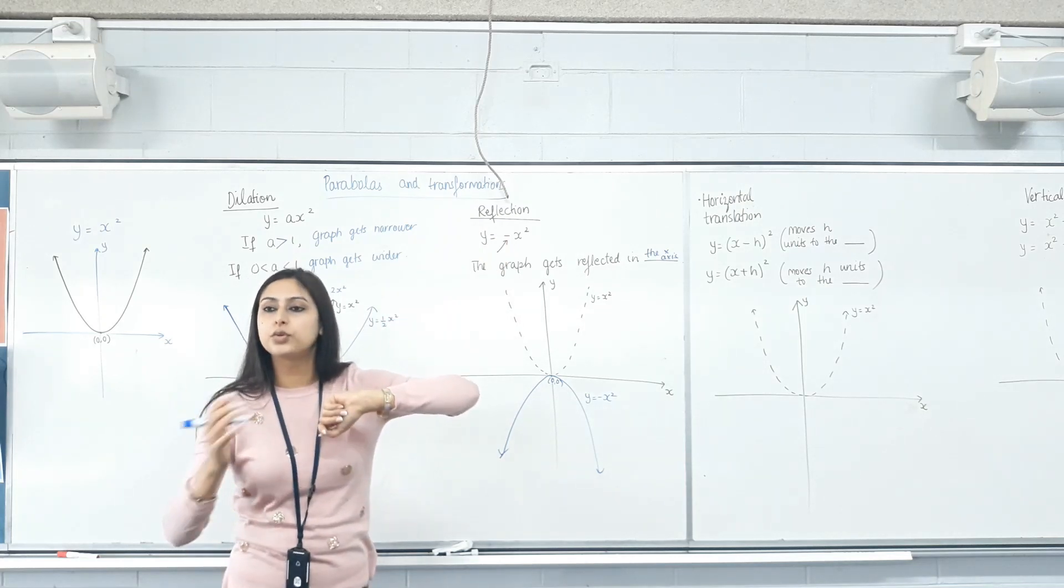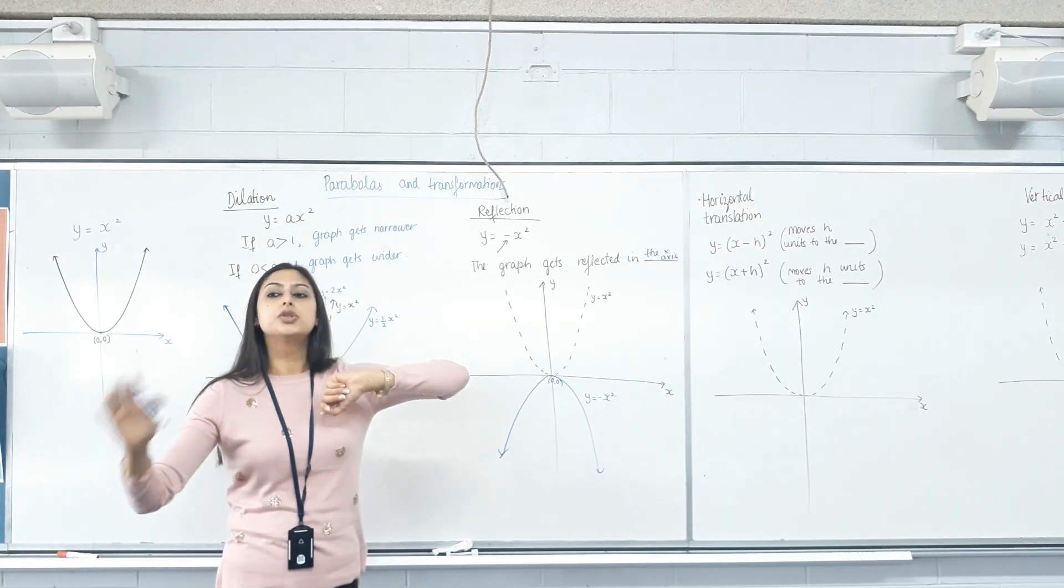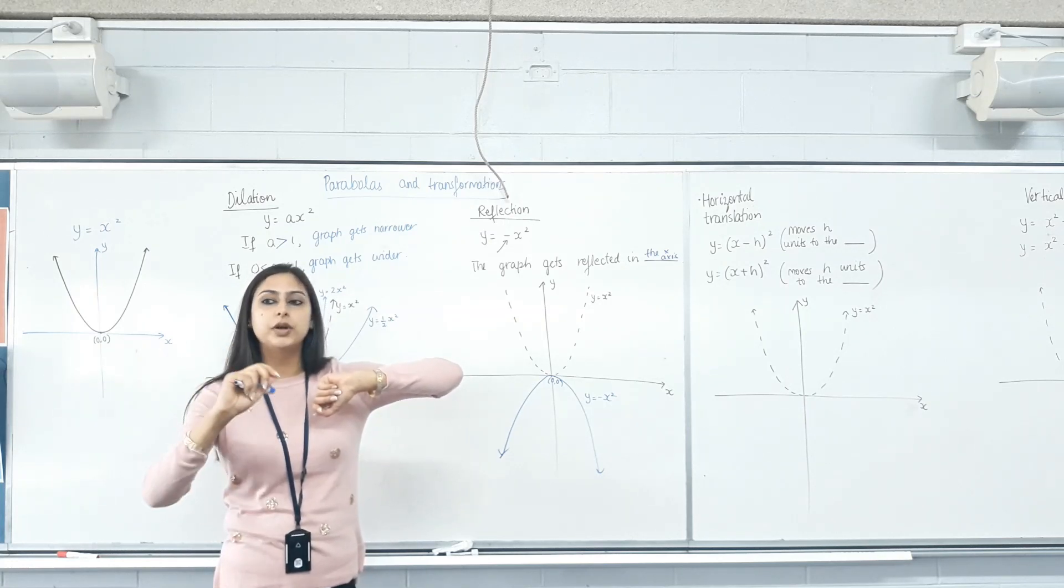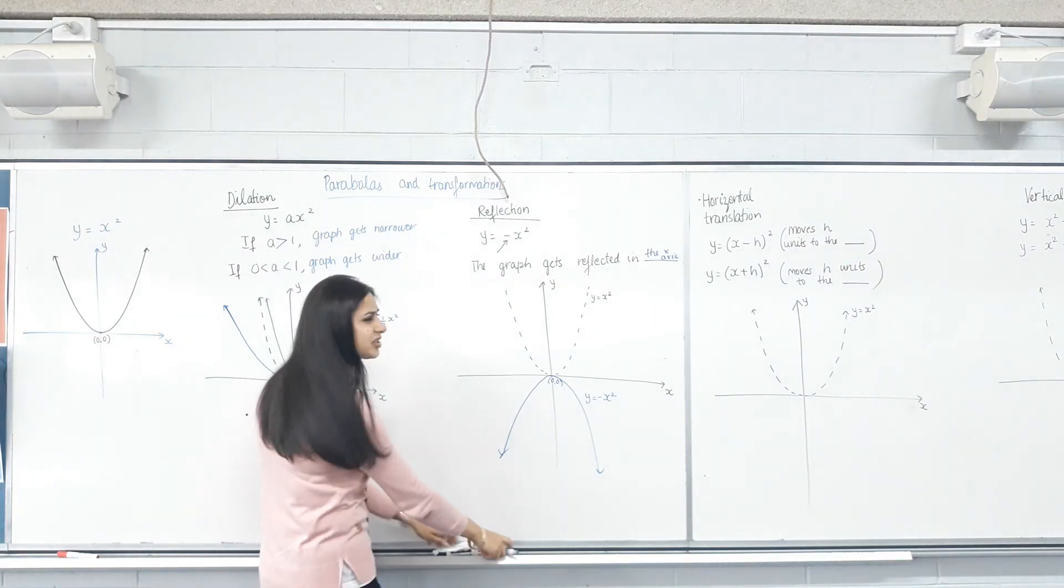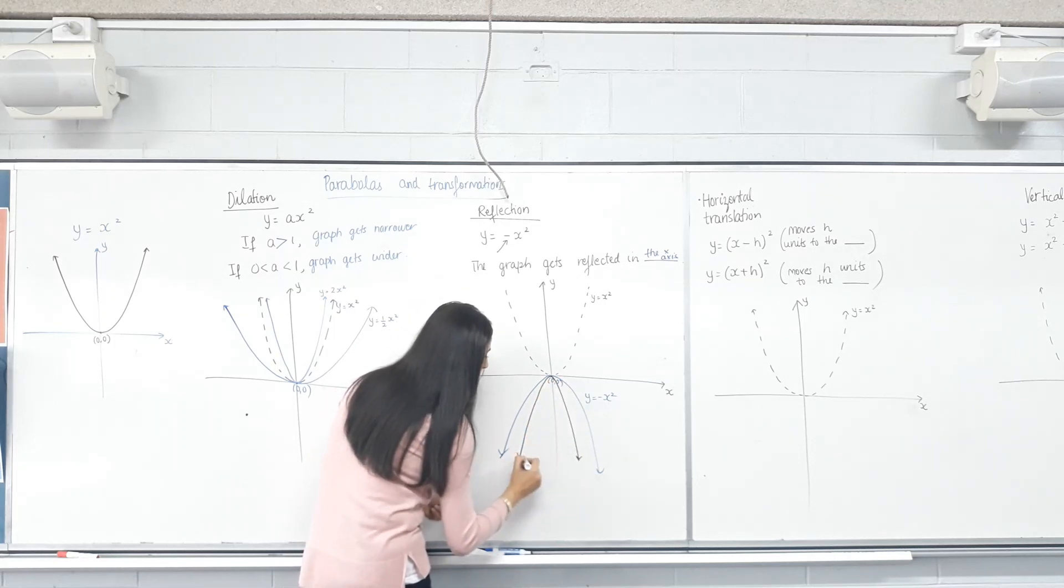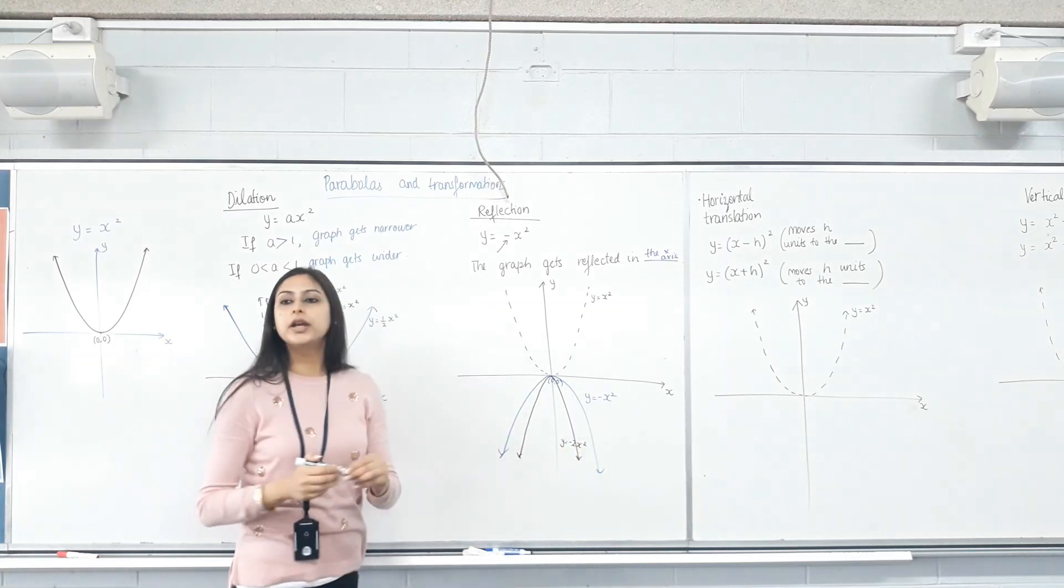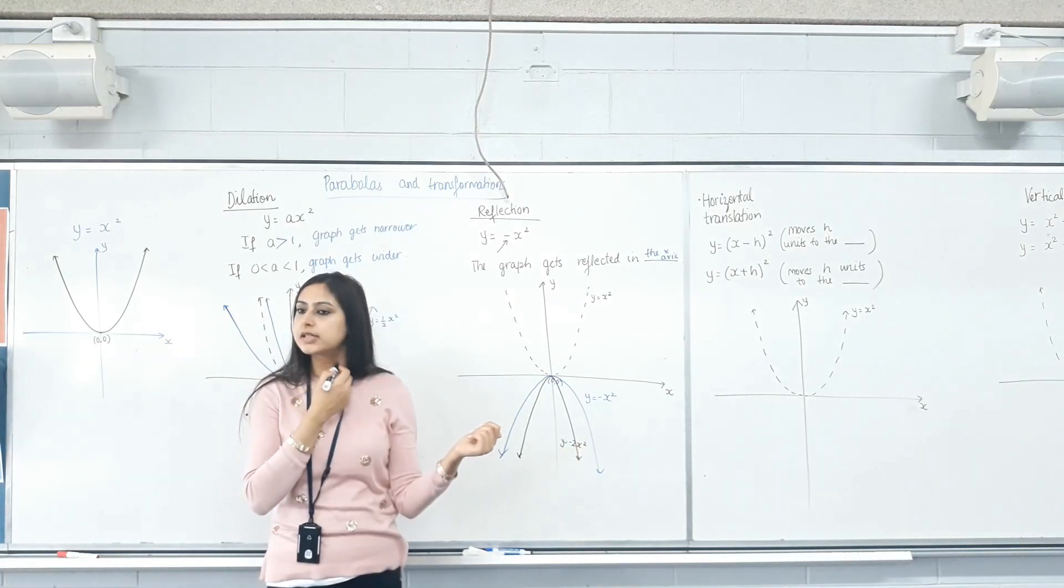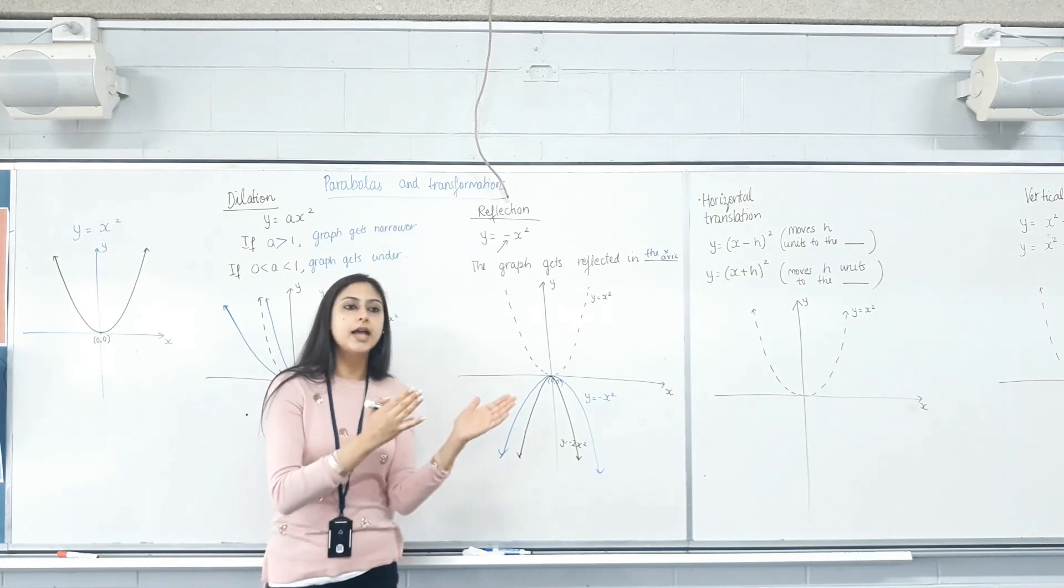Now, sketch negative 2x squared for me please. Can you predict what will happen before you sketch? So, it's negative but it has 2 in front of you. Narrower and reflected. You guys are so smart. Check if you get that. So, negative 2x squared you've got the reflection with the minus sign and you've got the 2 which makes it narrower. So, narrower and reflected.